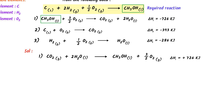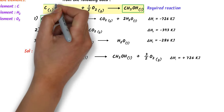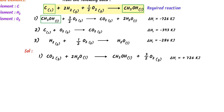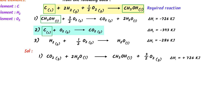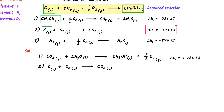Secondly, in the required reaction there is one carbon at the left-hand side, while in the second reaction, carbon is also at the left-hand side — the same side. So I write this reaction as it is: carbon plus O₂, then carbon dioxide. The enthalpy change is ΔH₂ = −393 kilojoule.